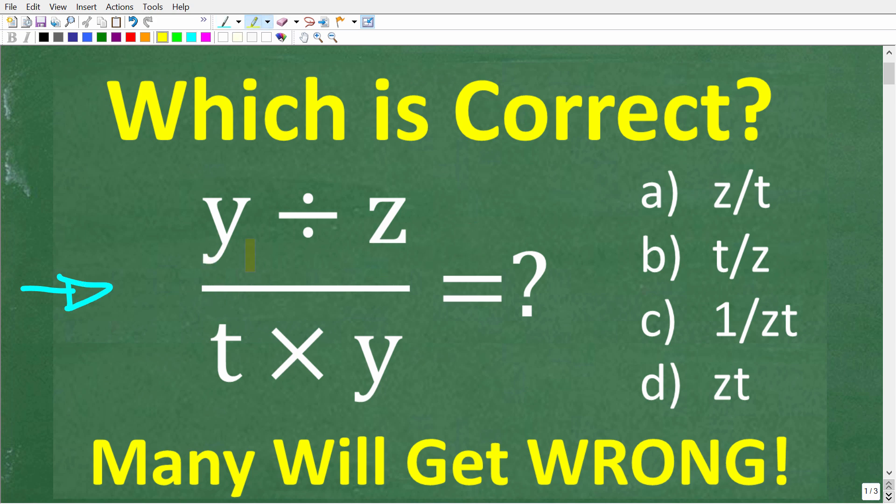Alright, so we have this variable expression y divided by z all over t times y. What is this thing equal to? Now we do have a multiple choice question, and let's take a look at our answers.